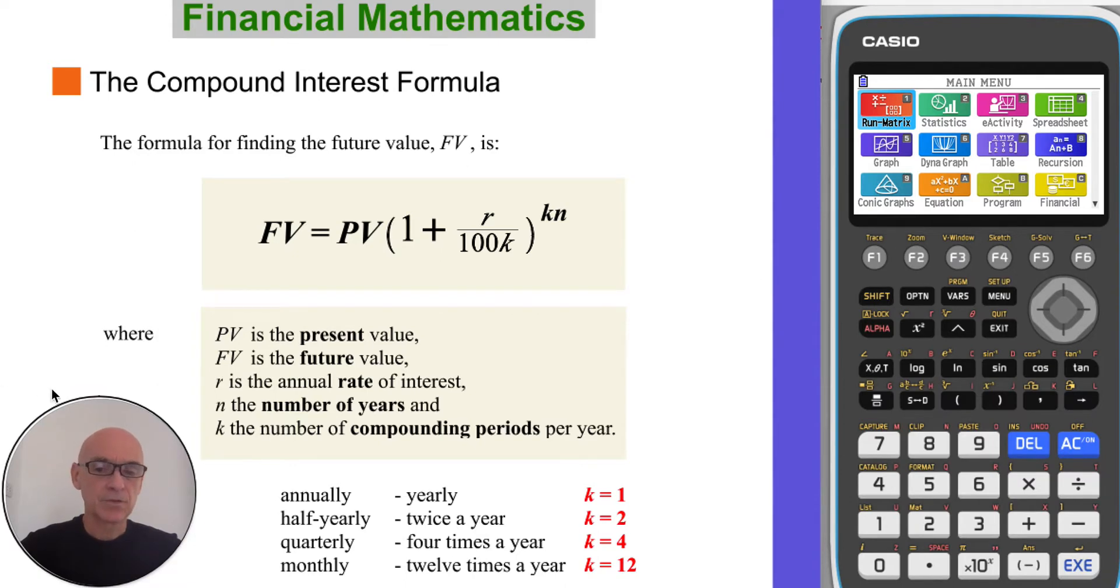If the interest is compounded annually, or yearly, then K equals 1. If the interest is compounded half yearly, that's twice a year, then K equals 2. If the interest is compounded quarterly, that's 4 times a year, then K equals 4. And if the interest is compounded monthly, that's 12 times a year, so K equals 12.